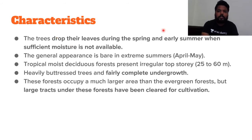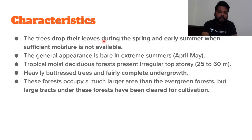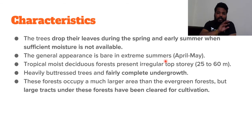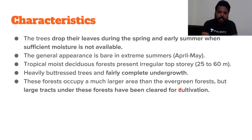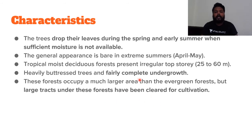Deciduous trees drop their leaves during spring and early summer when sufficient moisture is not available. General appearance is bare in extreme summers. Tropical moist deciduous forests have an irregular top story with tree heights of 25 to 60 meters, heavily buttressed trees, and fairly complete undergrowth. This forest occupies a much larger area than evergreen forests, but large tracts under this forest have been cleared for cultivation.